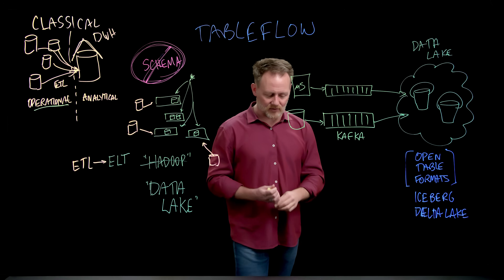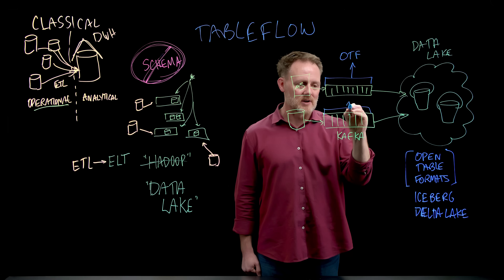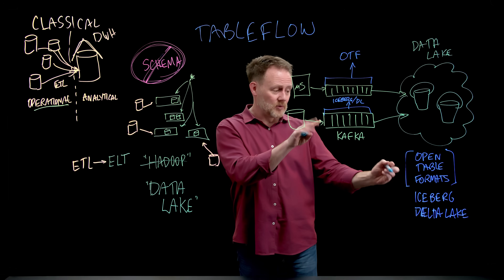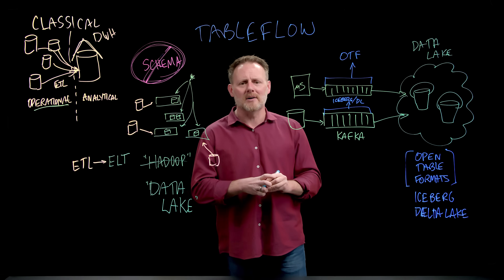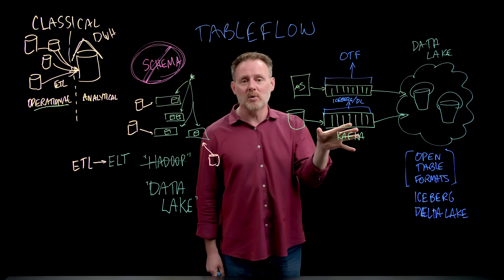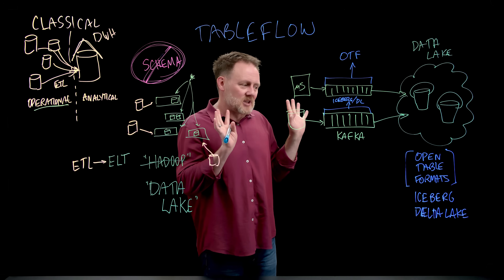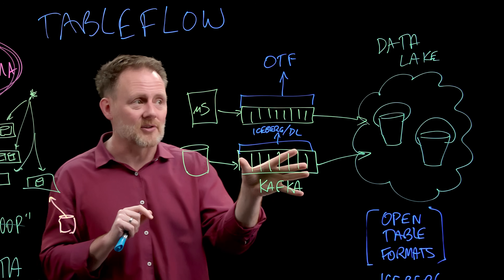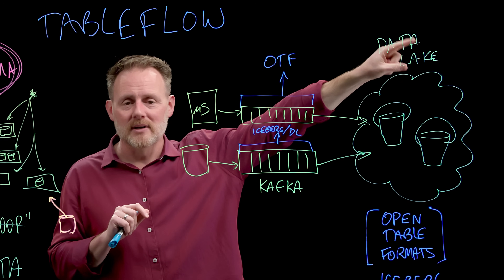So Tableflow — fundamentally what it does is take this data in this topic and expose it as an open table format. This data in this topic: here you go, it's Iceberg, it's Delta Lake. I can query using the tools compatible with these open table formats the actual data in this actual topic. That's not that it's copied somewhere else internally inside Confluent Cloud and we just hide that. It's that this topic is actually stored inside Kora — that's Confluent's Kafka engine inside Confluent Cloud — actually stored in a way that is natively compatible with the open table format.